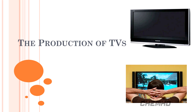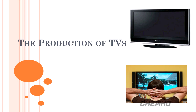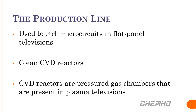First off, we are going to talk about the production of plasma and LCD displays. A major greenhouse gas that is part of the production is nitrogen trifluoride, or NF3. Its shape is trigonal pyramidal. Along the production line, NF3 is used to create microcircuits in flat panel televisions. It is also used to clean CVD reactors. CVD stands for chemical vapor deposition, and CVD reactors are pressured gas chambers in plasma televisions.